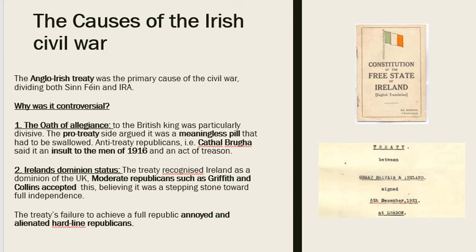The second part of the Anglo-Irish Treaty was that it gave Ireland dominion status. When the Irish negotiating team went to London, they were hoping to get a 32-county republic, but they did not achieve this. The Anglo-Irish Treaty instead recognised Ireland as a dominion of the United Kingdom — the same status as Canada and Australia at the time. Moderate politicians such as Arthur Griffith and Michael Collins accepted dominion status, saying it was a stepping stone towards proper independence and hopefully a republic.